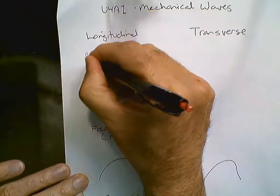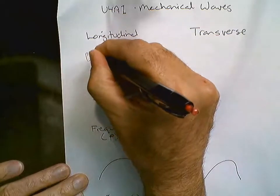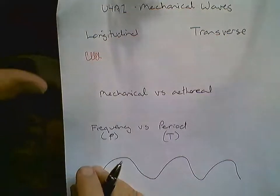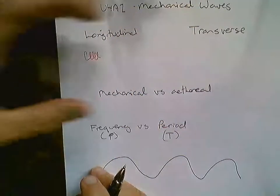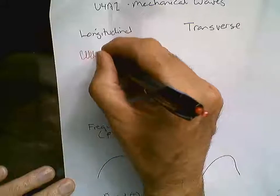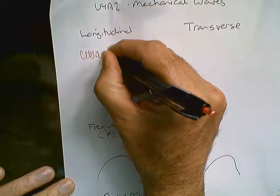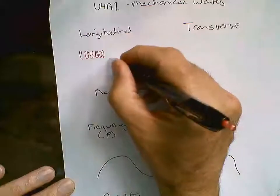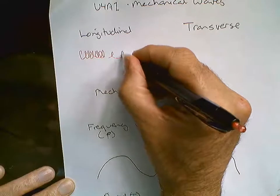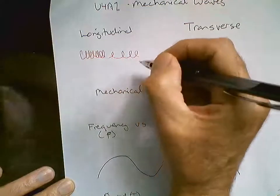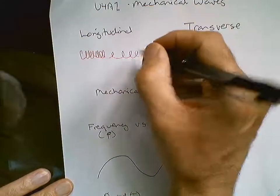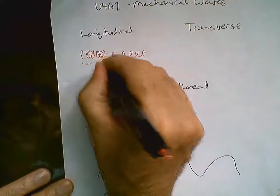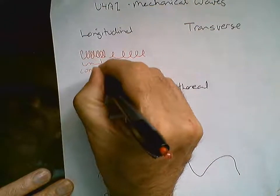A longitudinal wave — what you would have to imagine is that you held a slinky in your hand and you pushed it out. So if you pushed it across the surface, what you would get are areas of compression. The coils would be tight together, and then you would get areas of rarefaction.